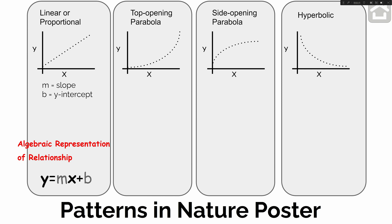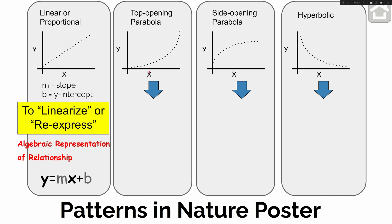In this video, that's what I want to show you. It turns out that there's a mathematical technique called linearizing a graph, or re-expressing a graph, to make a nonlinear relationship appear linear. And if you can do that, then you can very easily write the equation for how the two variables are related. On our Patterns in Nature poster in the classroom, or the handout that I gave you, it shows you how to do those two things — to linearize or re-express a nonlinear graph.